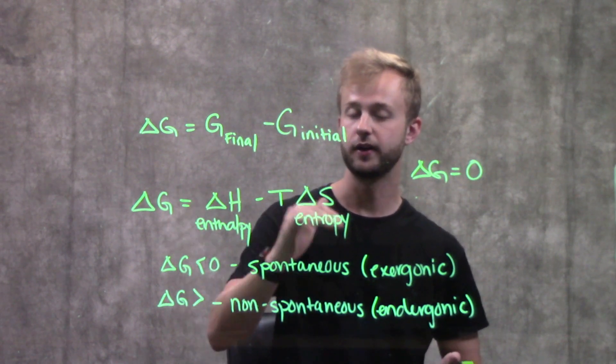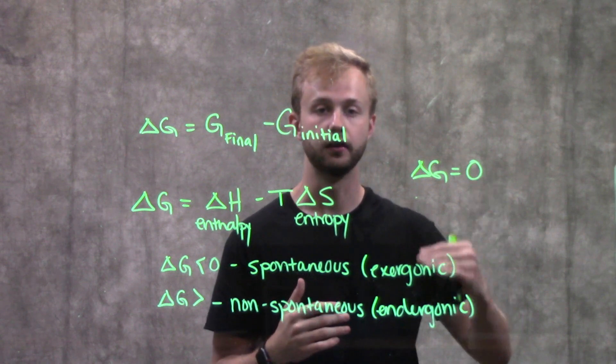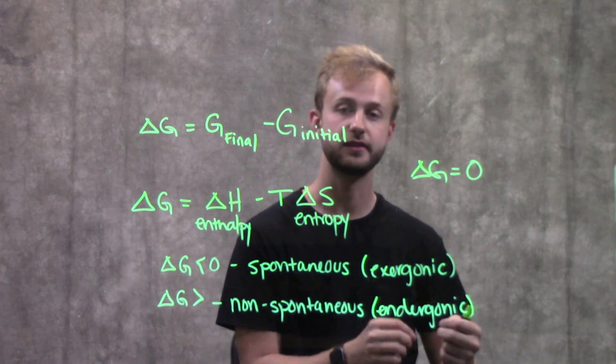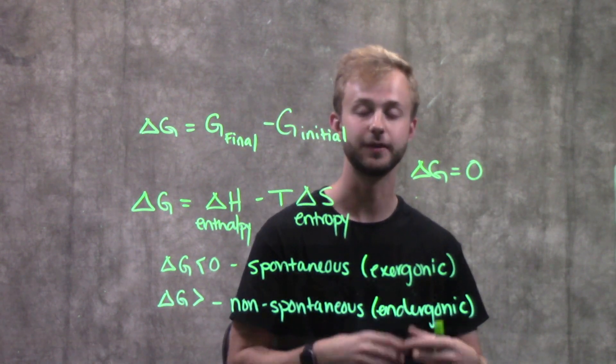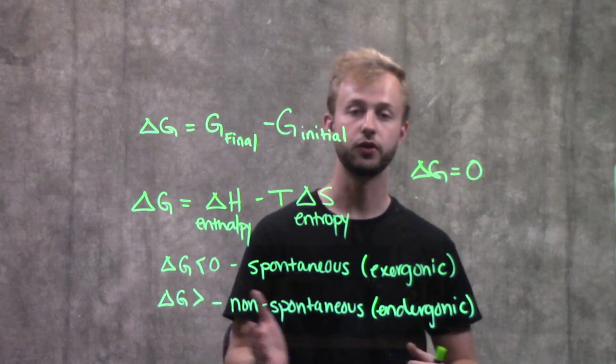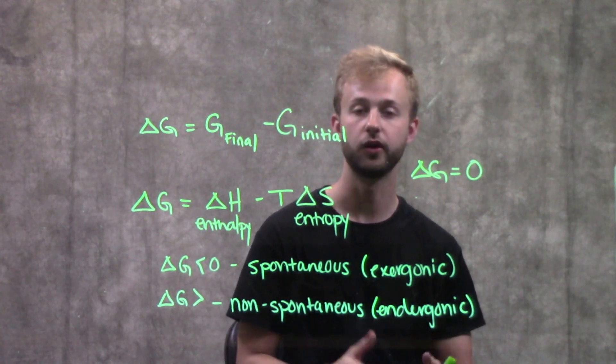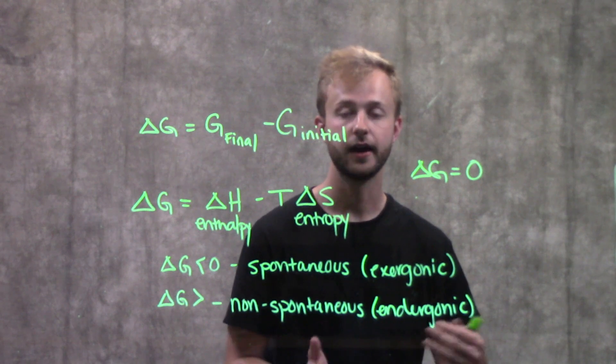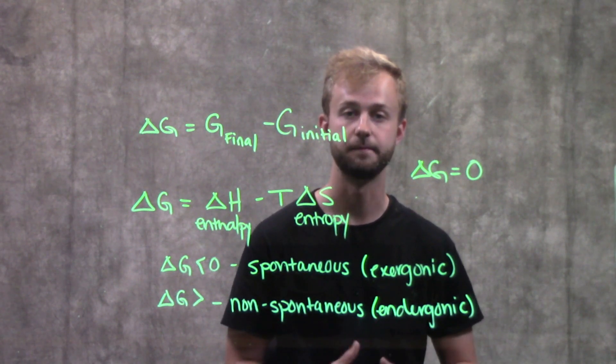So as reactions proceed, if you get to a state with the lower free energy, that state is going to be more stable, so it's going to be less likely to change. And that will go all the way until we reach equilibrium where our free energy is zero and the rates of the forward and the reverse reactions are the same.